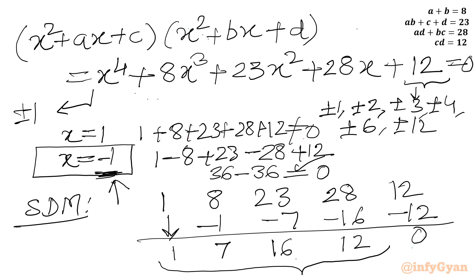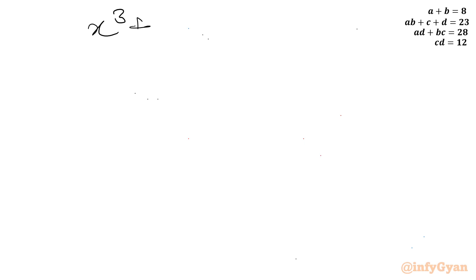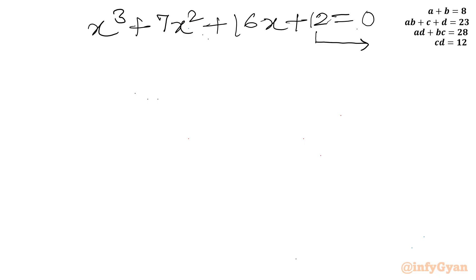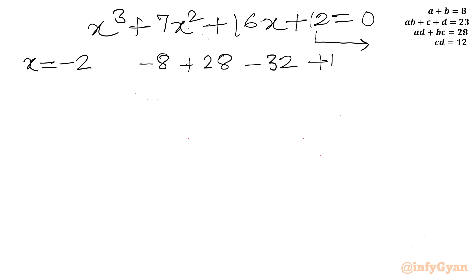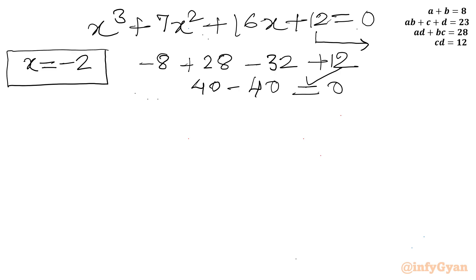The cubic equation is x cubed plus 7x squared plus 16x plus 12 equals 0. Again using the same possible factors, I will apply x equals minus 2: minus 8 plus 7 times 4 equals 28, minus 32 plus 12. So 28 plus 12 equals 40, minus 40 equals 0. So our second solution is x equals minus 2, and x plus 2 is one factor.